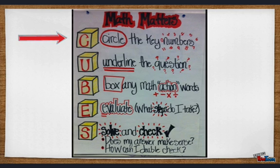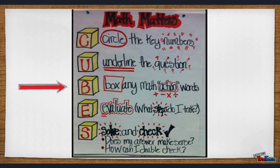CUBES is an easy strategy that stands for: C — circle the key numbers. U — underline the question. B — box any math action words.